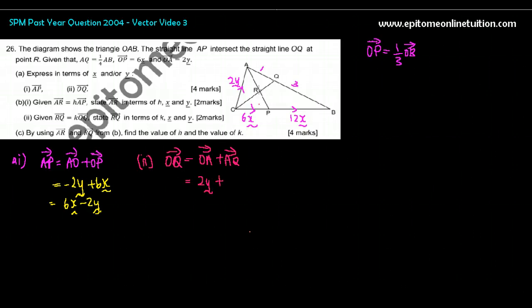And what's AQ? Remember, AQ is 1 over 4 of AB. So it's better to write it down: AQ is 1 over 4 of AB. So what's AB? AO plus OB, correct?